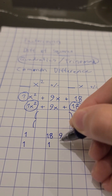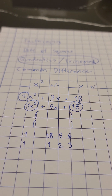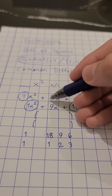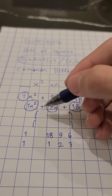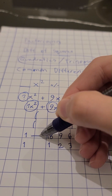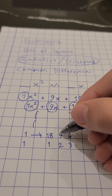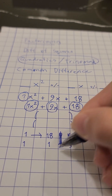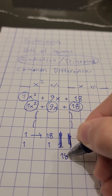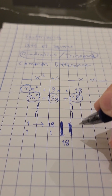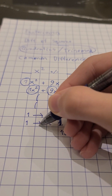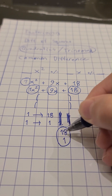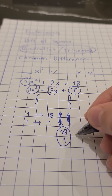We take all the possible multiples from 1, and we take all the possible multiples from 18, which are 18 and 1, 9 and 2, 6 and 3. Our goal is to get the middle number, which is 9, by multiplying these two multiples. So we're going to start with 1 and 18: 1 times 18 is 18, and 1 times 1 is 1. Can we get the number 9 using these two numbers? No.